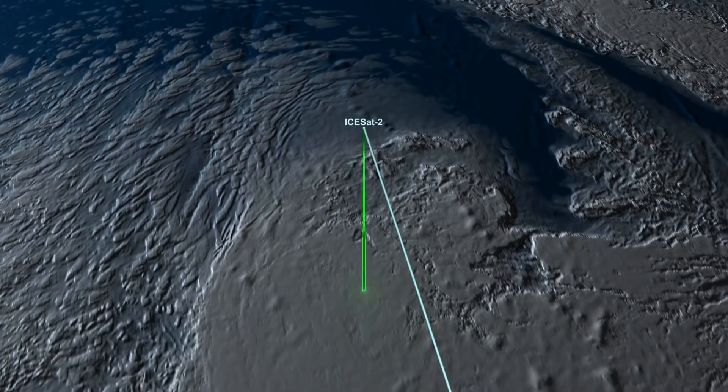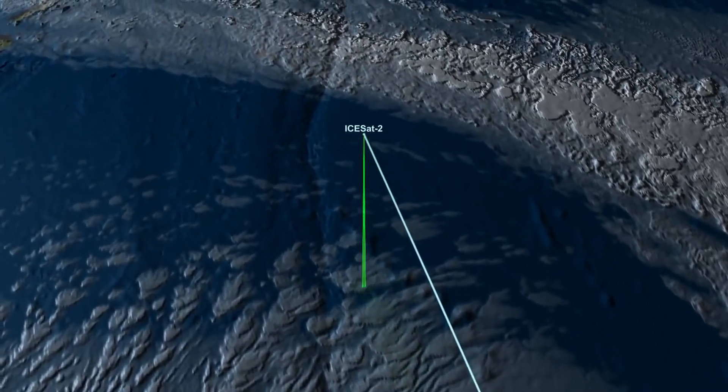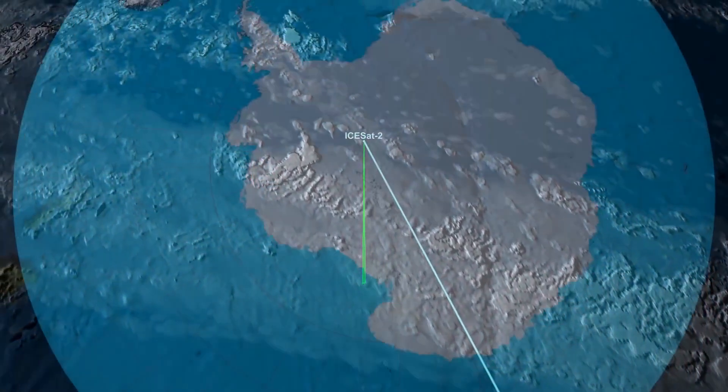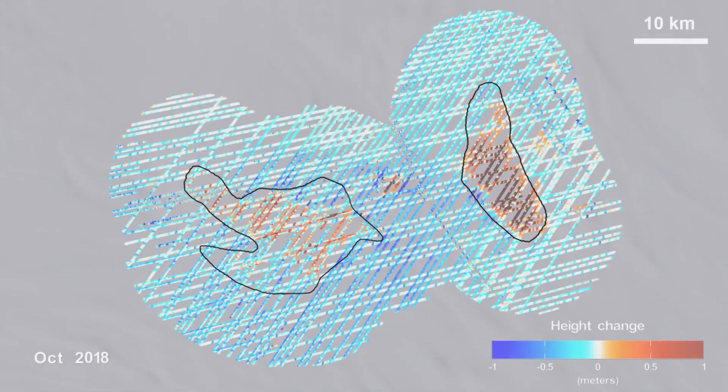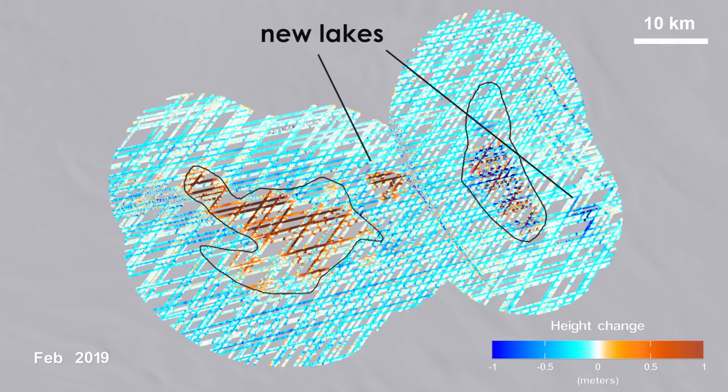Thanks to the more advanced laser technology on NASA's ICESat-2 satellite, in a region very near a pair of larger lakes measured in 2007, two more of these lakes have just been found.